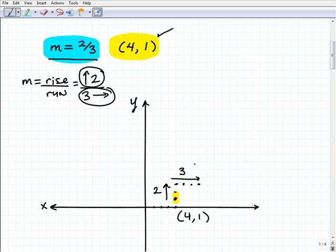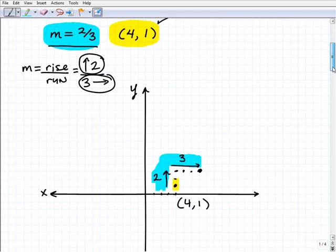So that makes sense. This right here is our slope. This right here represents our slope. So now we're at this point right here. And maybe you want to take a point and see if you can actually identify that coordinate.